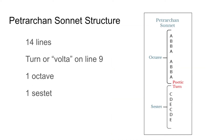So this is the structure of a Petrarchan sonnet, and keep in mind when I'm explaining this that these rules are here in poetry to be broken by the poet. But by knowing this base structure, you can analyze why the poet is breaking the structure and what meaning they're trying to convey.